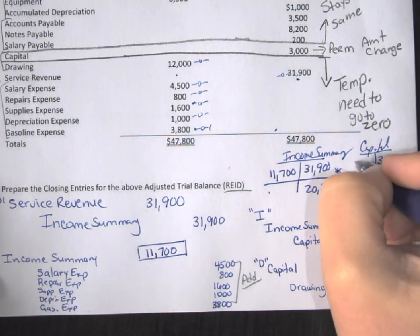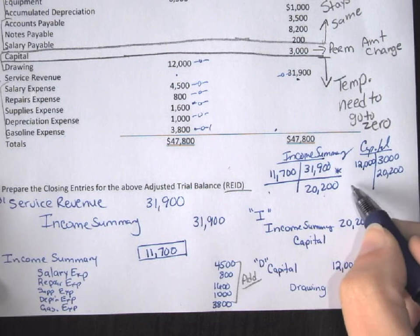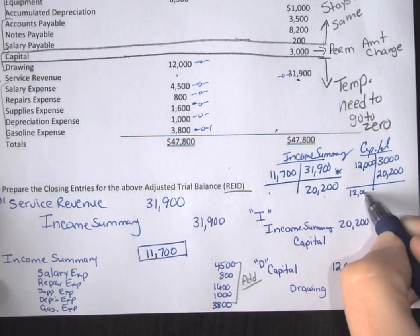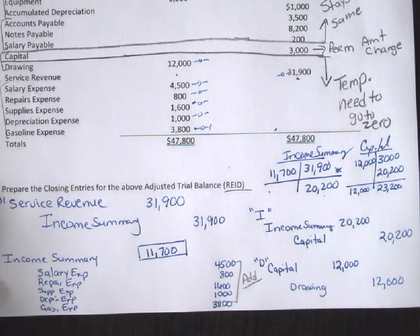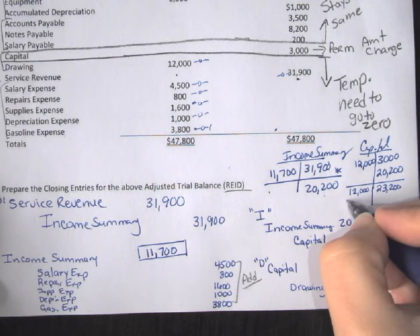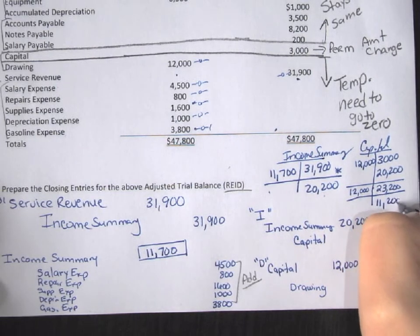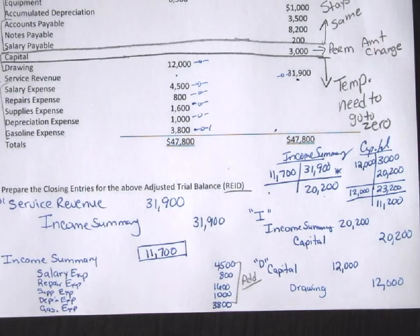I also need to finish posting to find the new capital balance. On the debit side of capital I have $12,000 from drawing, and on the credit side I have $23,200. Taking those amounts, my new capital balance is $11,200. That's really the overview of the closing entries.